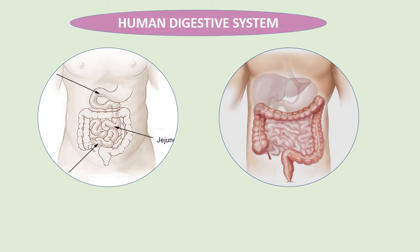The rectum is a straight chamber that connects the colon to the anus. The rectum's job is to receive stool from the colon; the brain then decides if the rectal contents can be released or not. The anus is the last part of the digestive tract — a two-inch long canal consisting of the pelvic floor muscles and the anal sphincters.